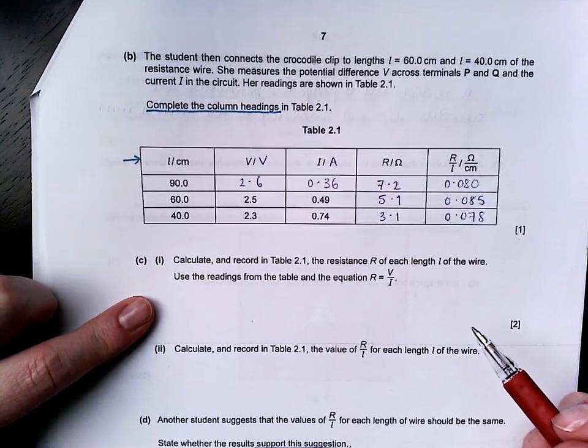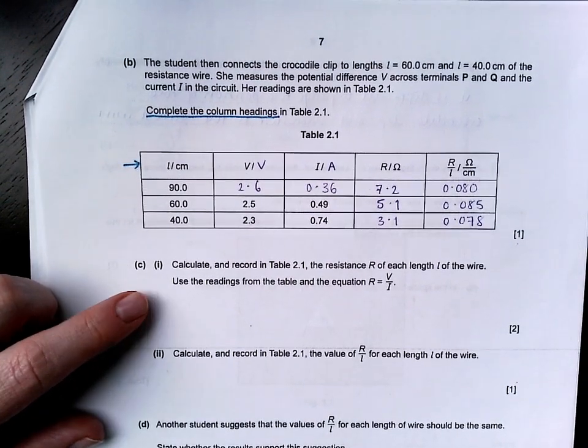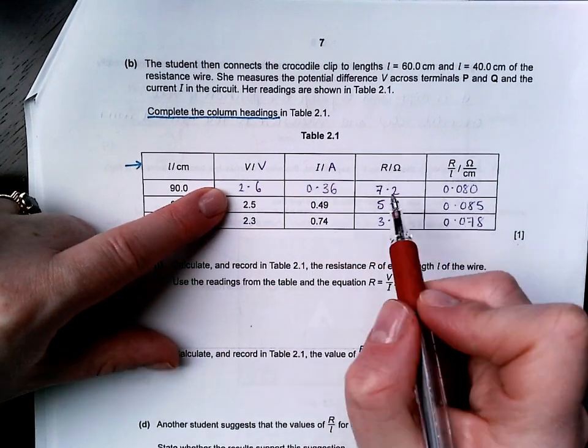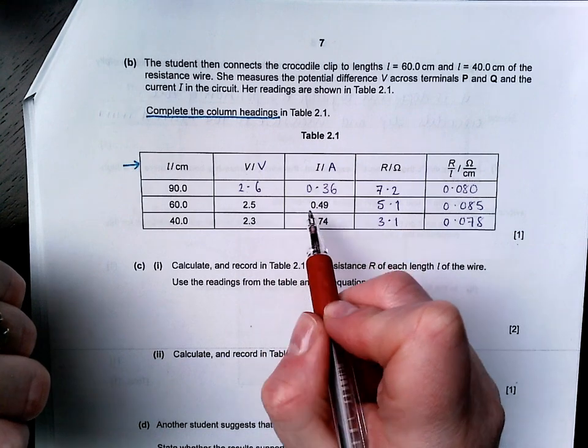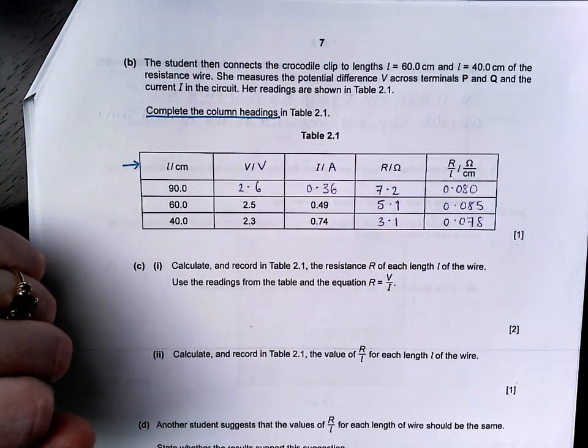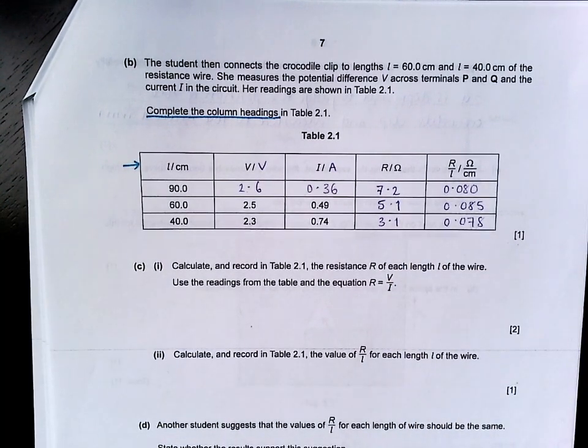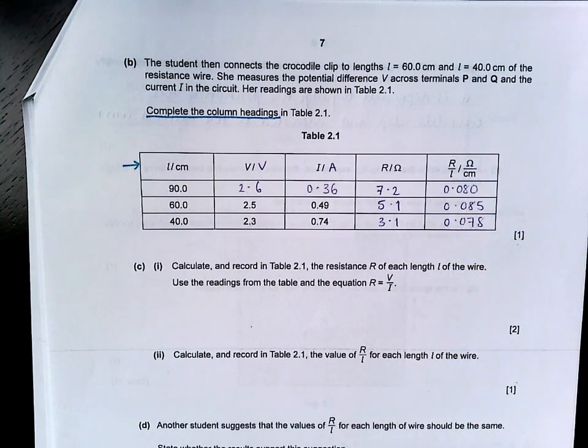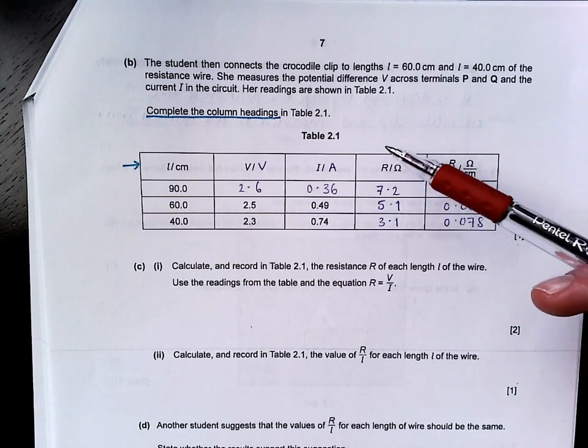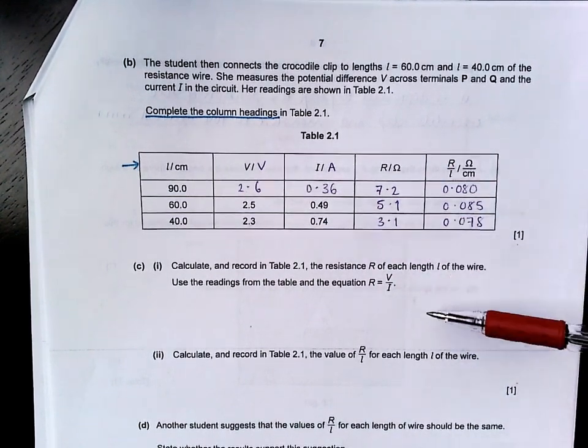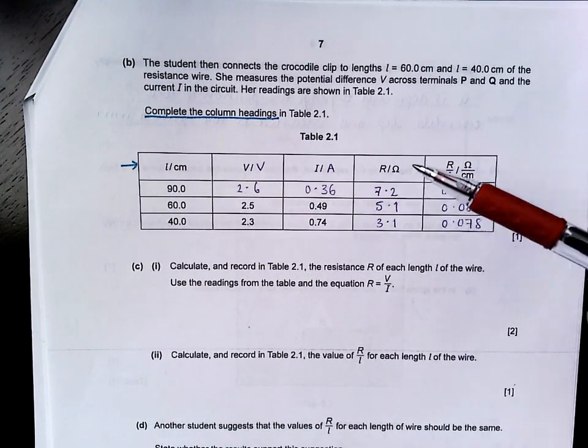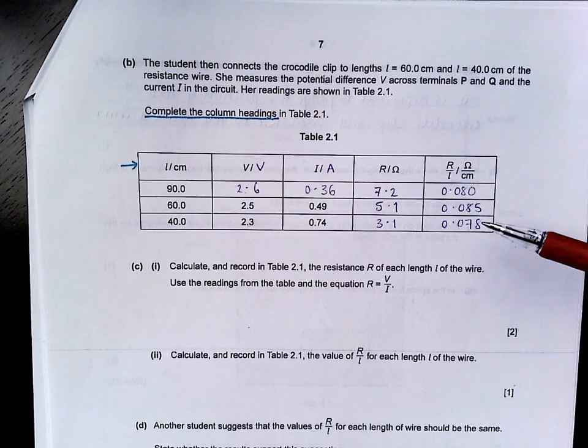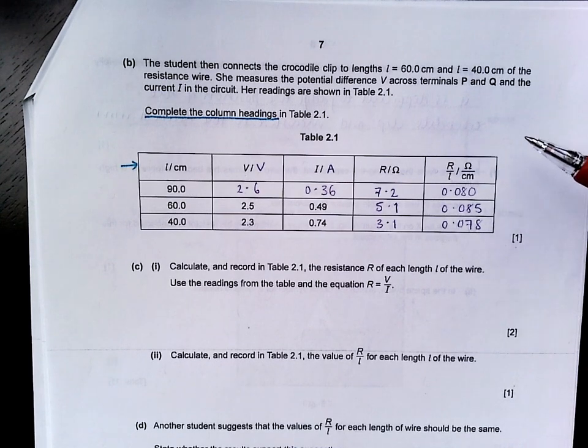In part CI, it says calculate and record in table 2.1 the resistance R of each length L of the wire. Use the readings from the table and the equation R is V divided by I. So we take V, 2.6, divided by I, 0.36, I get 7.2. All my values I used are two significant figures. So you should have had 7.2, 5.1 and 3.1. If you have read this wrong, but you still calculated correctly, you will still get the marks here.